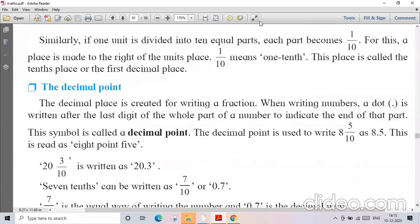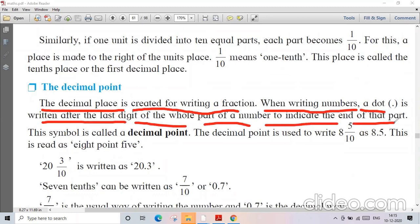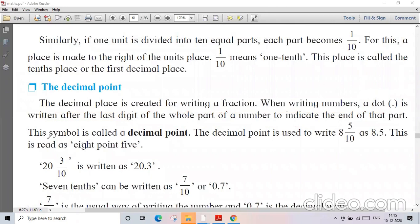One upon 10 means one-tenth. This place is called as tenths place or the first decimal place. The decimal point is written after the last digit of the whole number to indicate the end of the whole part. The symbol is called a decimal point. For example, 8 and 5 upon 10 is written as 8.5. Similarly, 23 upon 10 can be written as 2.3, and 7 upon 10 can be written as 0.7.